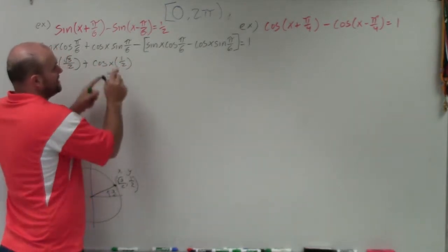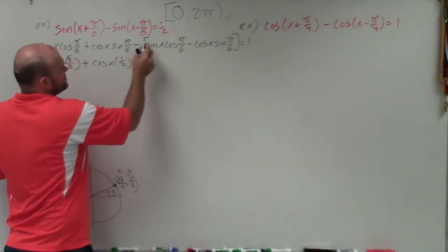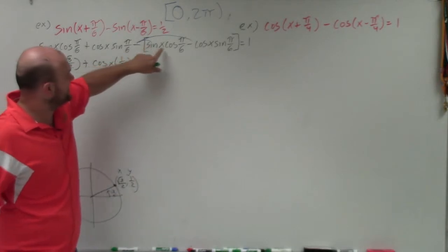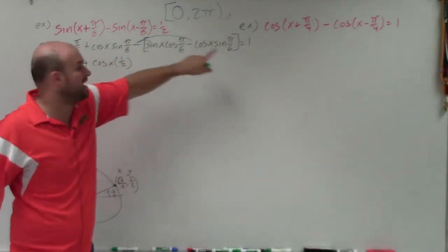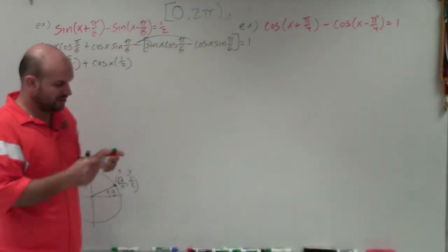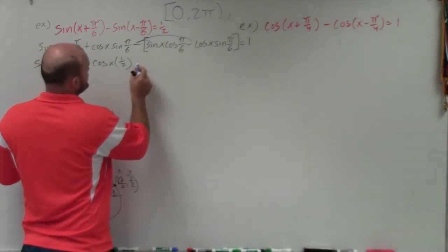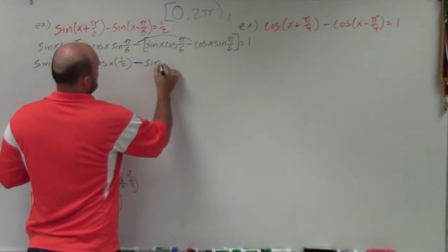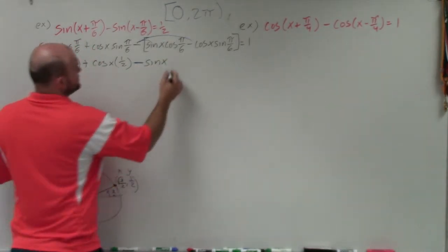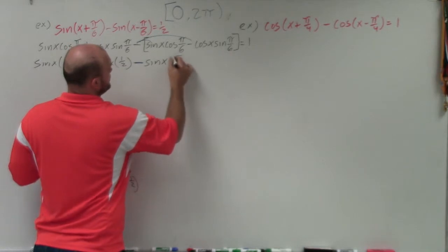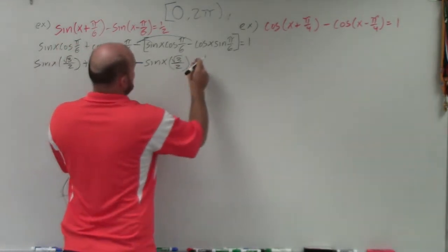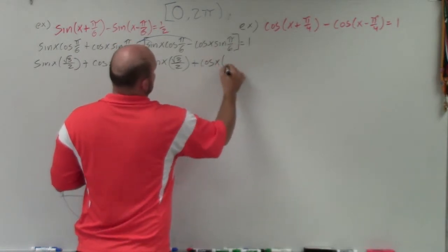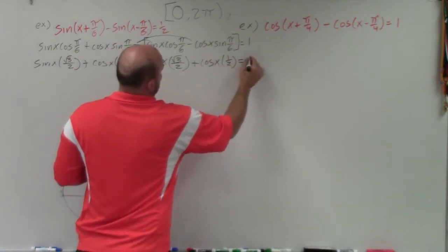It's very important to make sure you distribute the negative sign. I can distribute that to both terms. So that means that becomes a negative, and then this is going to turn into a positive, because minus a negative will turn into a positive. I'll write those in blue just so you remember what I did. So that becomes a negative sine of x times square root of 3 over 2, and then this becomes a plus cosine of x times 1 half, equals 1.